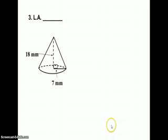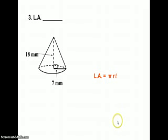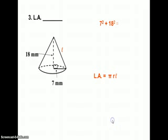Number 3: lateral area. The formula for lateral area is π r L, and L stands for slant height, which we don't know. So we're going to have to use the Pythagorean theorem again to solve for L.